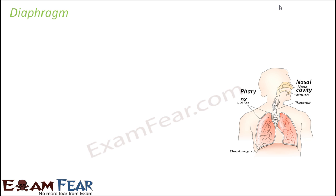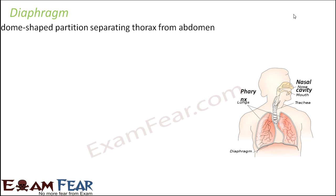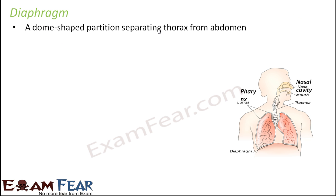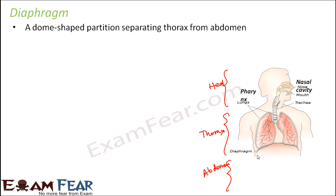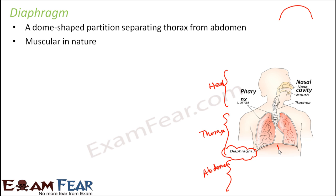The next important structure is the diaphragm, which plays a very important role during breathing. The diaphragm is a dome-shaped muscular partition which separates the thorax from the abdomen. The body has three regions: the head, the thorax, and the abdomen. The thorax and abdomen are separated by this muscular dome-shaped partition called the diaphragm.